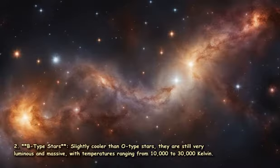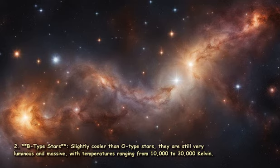2. B-type stars: Slightly cooler than O-type stars. They are still very luminous and massive, with temperatures ranging from 10,000 to 30,000 Kelvin.